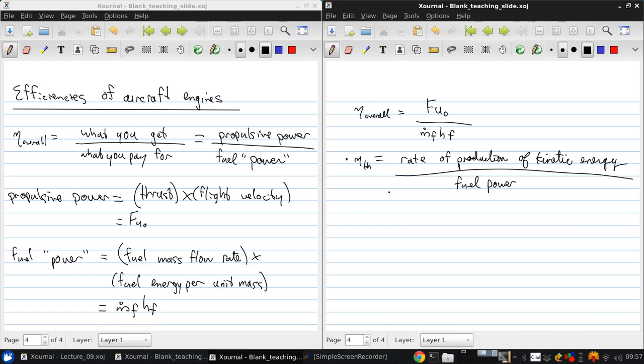So this is m dot e ue squared over 2 minus m dot 0 u0 squared over 2, the change in kinetic energy, over m dot f h.